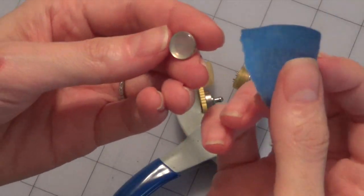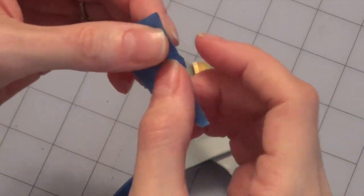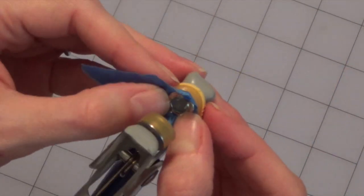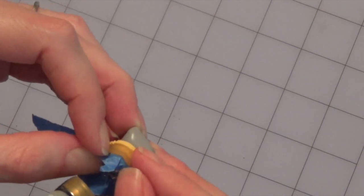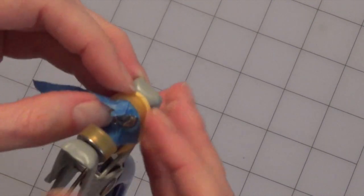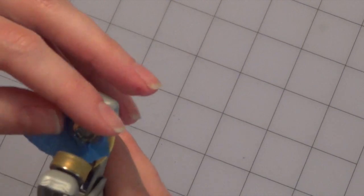Now I'm using these faux mother-of-pearl snaps, and just from past experience, these pliers can kind of scratch the top. So even though it makes it a little more tricky to get in there, I'm just putting some tape over it to protect it from being scratched.